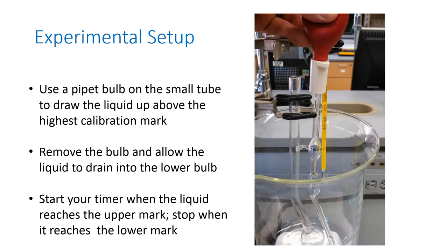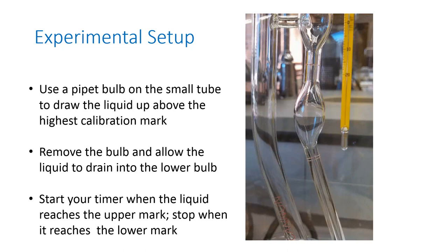Once the liquid is in there, you can take the pipette bulb off and let the liquid fall down through the viscometer, and there are two marks on the viscometer which you can see here. As the liquid drains down past the top mark, you'll start your timer, and as it drains down past the bottom mark, you'll stop your timer, and that is your time t in that previous equation that you're going to use to calculate your viscosity.